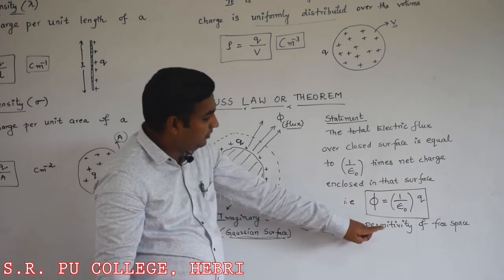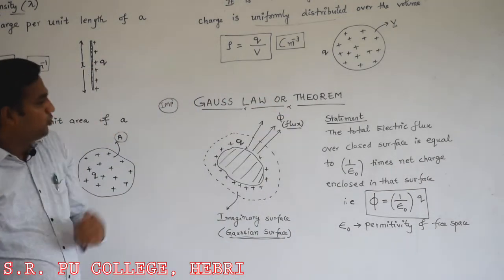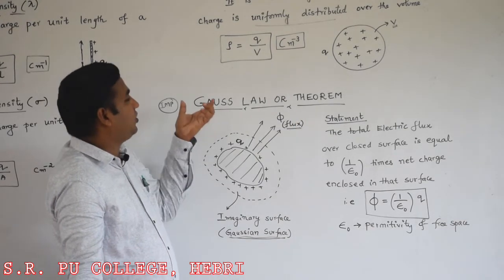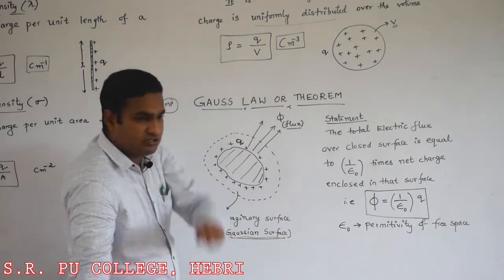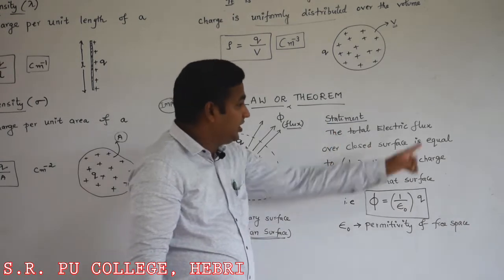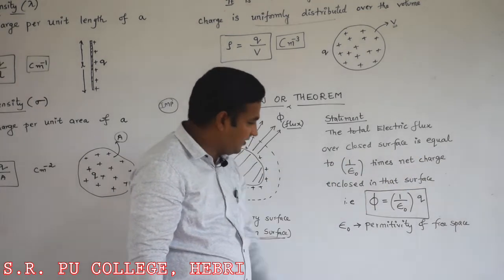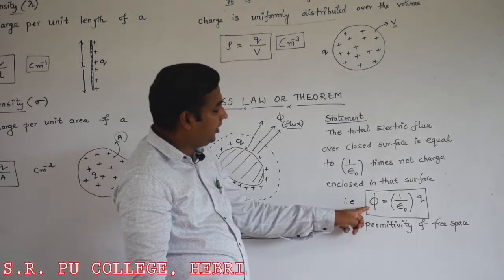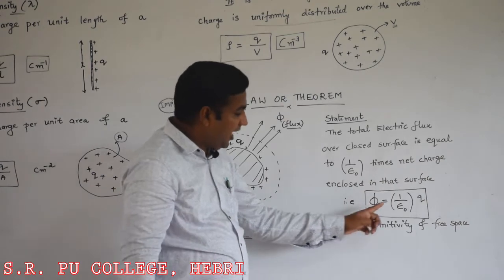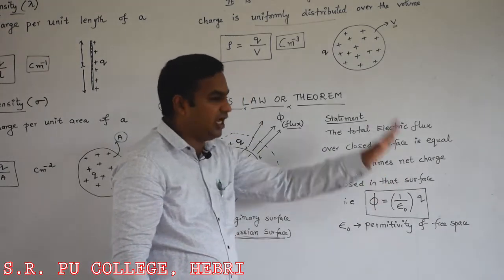Here Q is the total charge enclosed in that surface and epsilon naught is the permittivity of free space. This is an important concept for exams — usually for 1 or 2 marks, they ask the statement of Gauss law of electrostatics. The total electric flux over a closed surface equals 1 by epsilon naught times net charge enclosed in that surface. Mathematically, phi equals 1 by epsilon naught into Q.